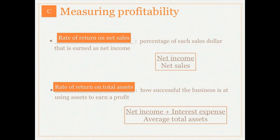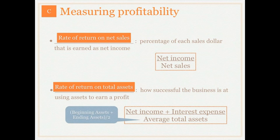Net income and interest expense are actually the return to our two types of financers: net income would be the return to the owners of our business, and interest expense would be the return to our creditors based on our assets. To calculate average total assets we take our beginning assets plus our ending assets and divide that sum by two.